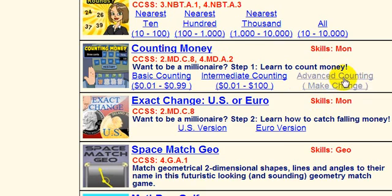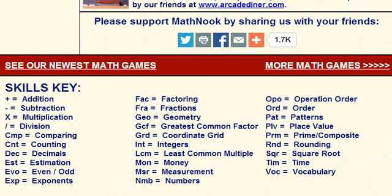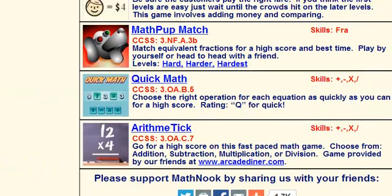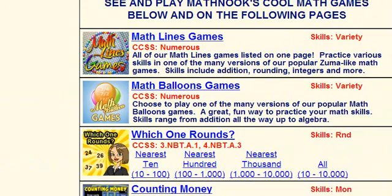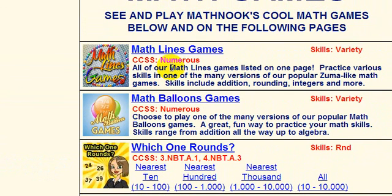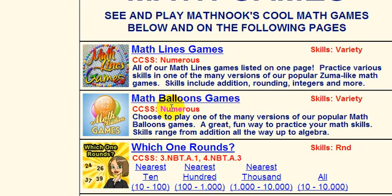If you're wondering about the skill abbreviations, it says M-O-N, which is easy to figure out, but if you don't know what it is, you can scroll down to the bottom of the page where it shows you the skill keys we have set up for the abbreviations. Some games have a CCSS number listed as 'numerous' with a variety of skills, and that's because clicking that link will take you to our Math Balloons game page, where there's a whole bunch of games that practice a variety of skills — too numerous to list individually. There's simply not enough room to put all the CCSS numbers and skills here.